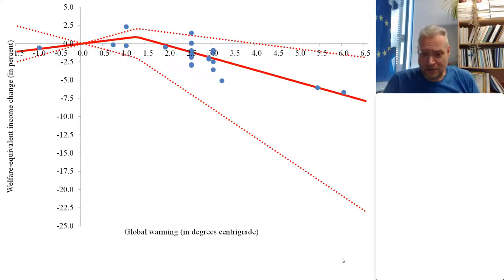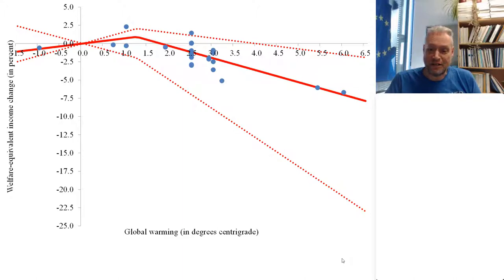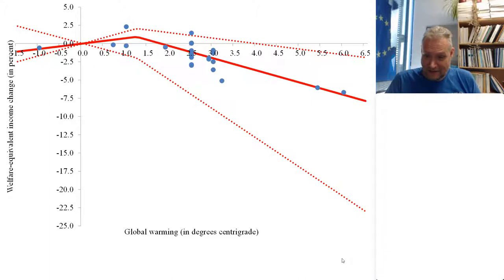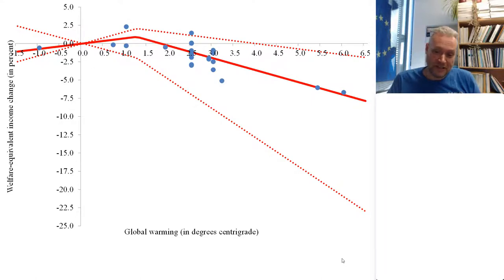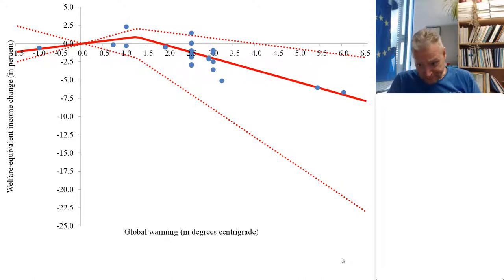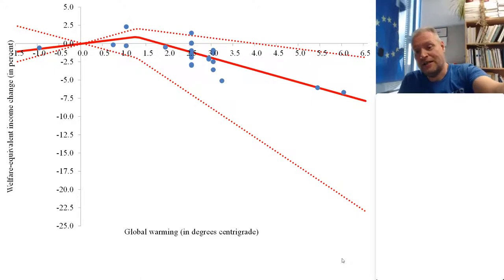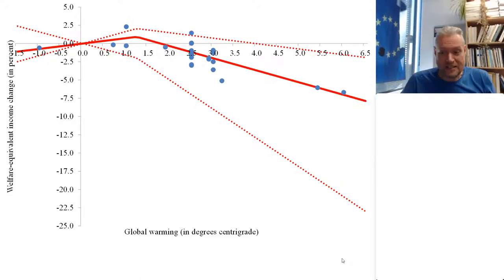Last time I showed this graph, which shows the impact of climate change on the welfare of the average person on the planet. On the horizontal axis we're looking at the seriousness of climate change measured by the change in global mean surface air temperature. On the vertical axis, the welfare equivalent income change. To interpret it: if the world were to warm by two and a half degrees, the average person would feel as if she had lost 1.3% of her income.